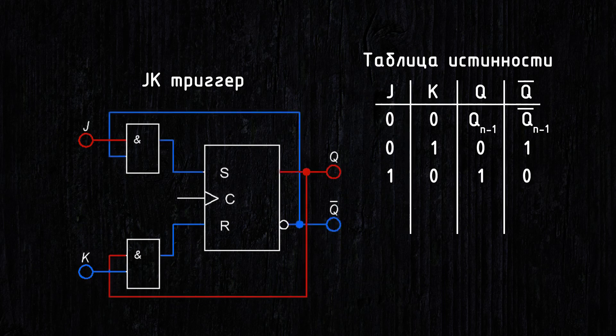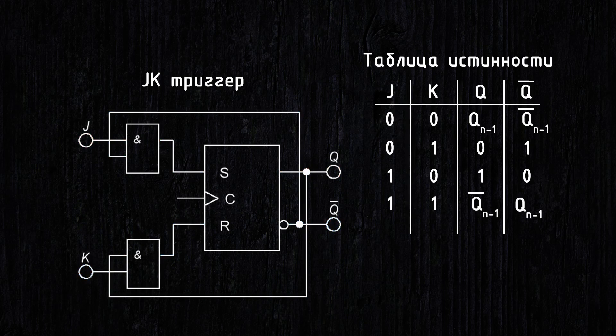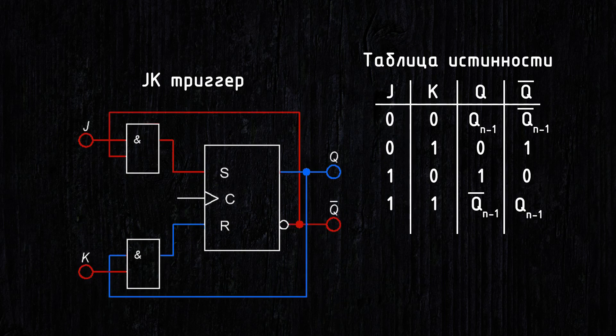Two 1s will cause alternating state changes. Let's say the flip-flop was reset. The 1 from the inverted output will go to the upper AND gate and set the flip-flop upon the arrival of the signal edge at C. The state has changed. Now the 1 from the Q output goes to the lower AND gate and resets the flip-flop as soon as the edge arrives at input C.